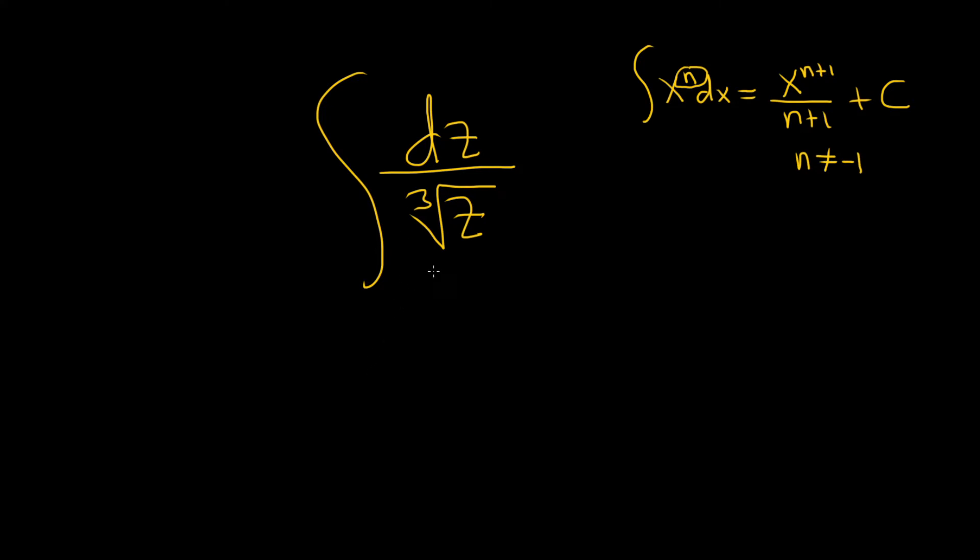So here let's go ahead and attempt to do that. This is really the cube root of z to the 1. So what we can do is write this as dz over z, and it's always this number over this number, so 1 over 3. That's the rule, it's always that number over that number.